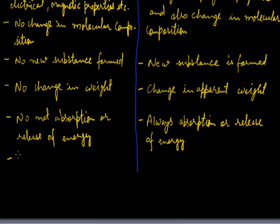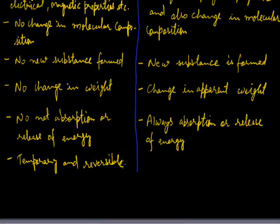And this change is temporary and can be reversed. Chemical change is permanent change and cannot be reversed by removing the cause of change, that is irreversible.